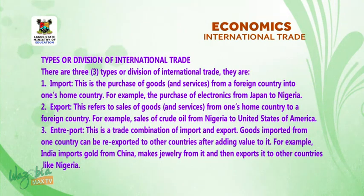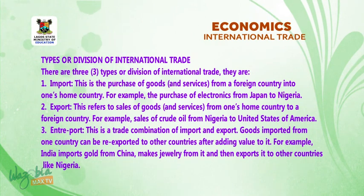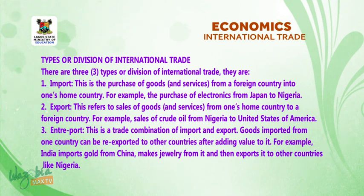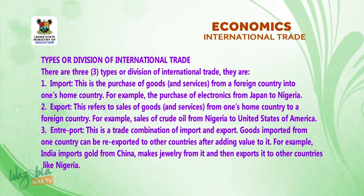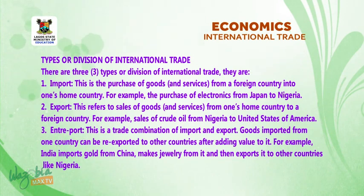There are three types or divisions of international trade. 1. Imports — this is the purchase of goods from a foreign country into one's home country. For example, purchase of electronics from Japan to Nigeria. 2. Export — this refers to sales of goods from one's home country to a foreign country. For example, sales of crude oil from Nigeria to the United States of America.